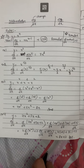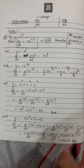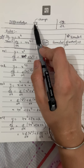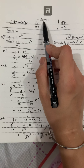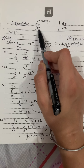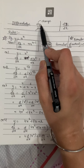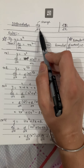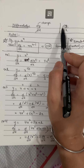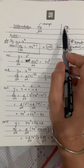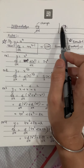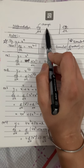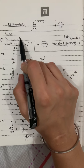Good evening students, today we'll discuss differentiation. We usually use the symbol dy/dx, where d is basically your change. So dy/dx implies change in y, which is a function of x, with respect to change in x. This d can also be represented with the delta sign, as delta y by delta x, but when your gap is approaching zero, you write dy/dx.